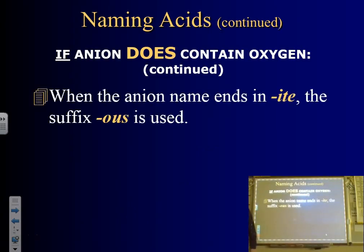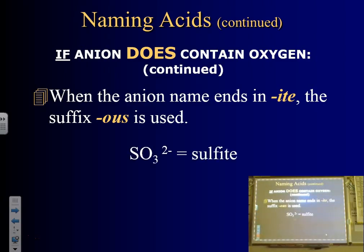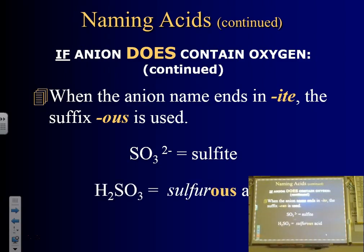What if it ends in -ite? If we take an oxygen away it ends in -ous. So sulfite, which has one less oxygen than sulfate, gives us sulfurous acid. The acids you've probably heard before are things like hydrochloric and sulfuric — so these names sound a little strange at first. Sulfurous — or sulfurous — either works.